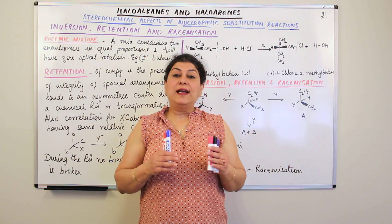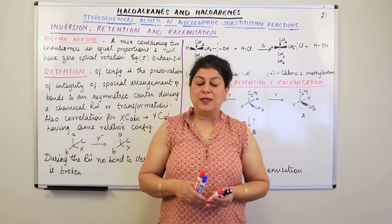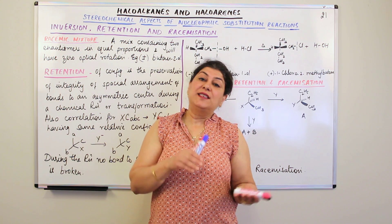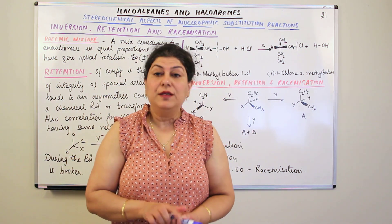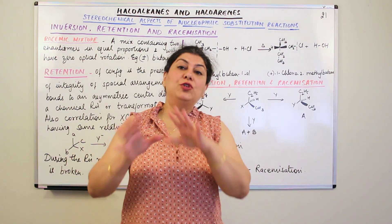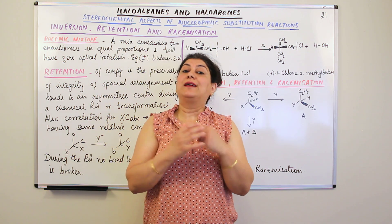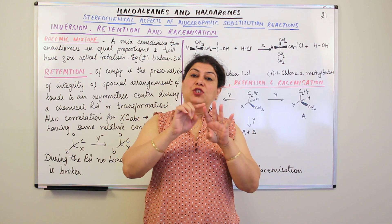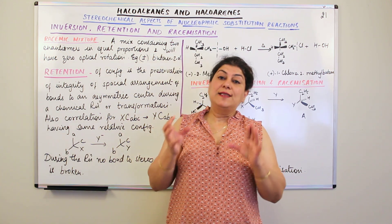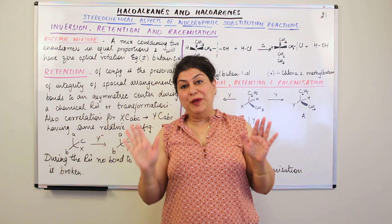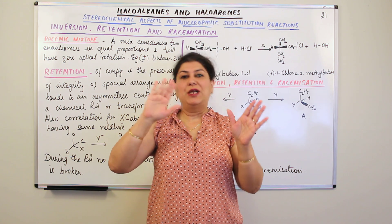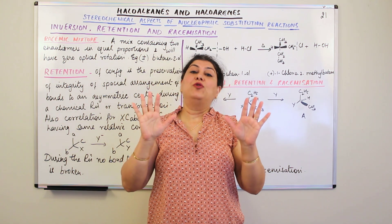Molecules that have asymmetry in them — that are not symmetrical — are the ones that show optical activity. There is asymmetry when the species attached to a central atom are all different. We know carbon is tetravalent; when all four species attached to carbon are different, the molecule is asymmetrical and shows optical activity. It would have two forms — one levorotatory and one dextrorotatory. Such isomeric forms are known as enantiomers.